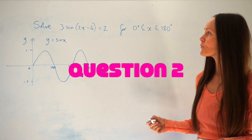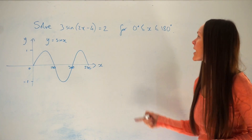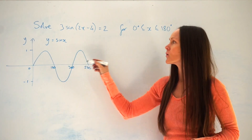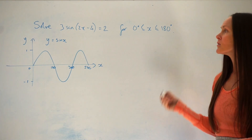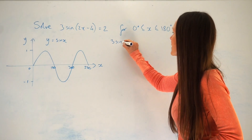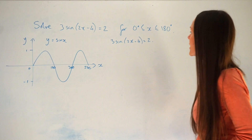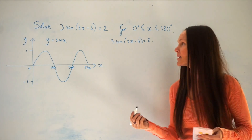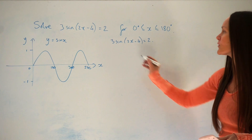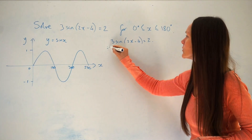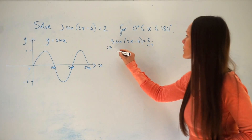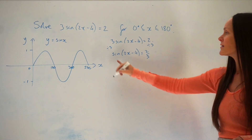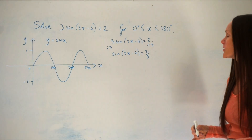In this question we have to solve 3sin(2x − 4) = 2 for x values between 0 and 180 degrees. This time, because I have sin, I've done a sketch of y = sinX. Now, it's a little different because we have a number at the front, so sin must be the subject of the equation. Dividing both sides by 3 gives sin(2x − 4) = 2/3. You always need to make sure that sin, cos, or tan is the subject at the beginning.